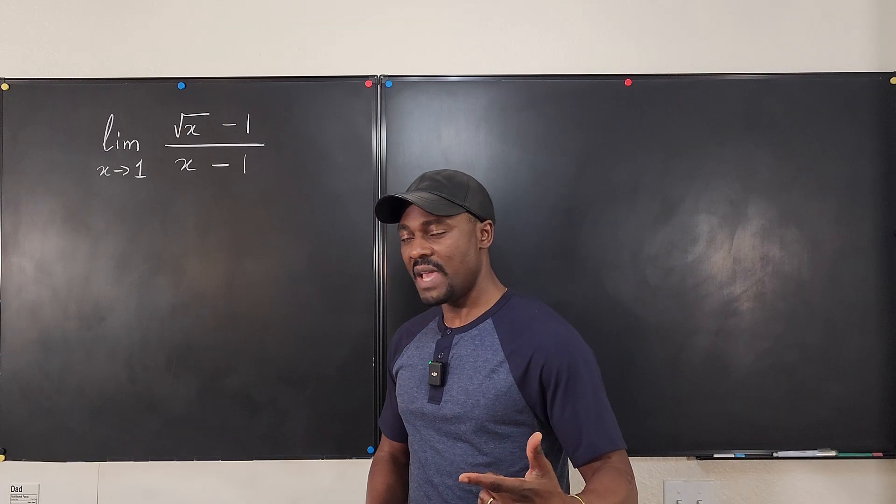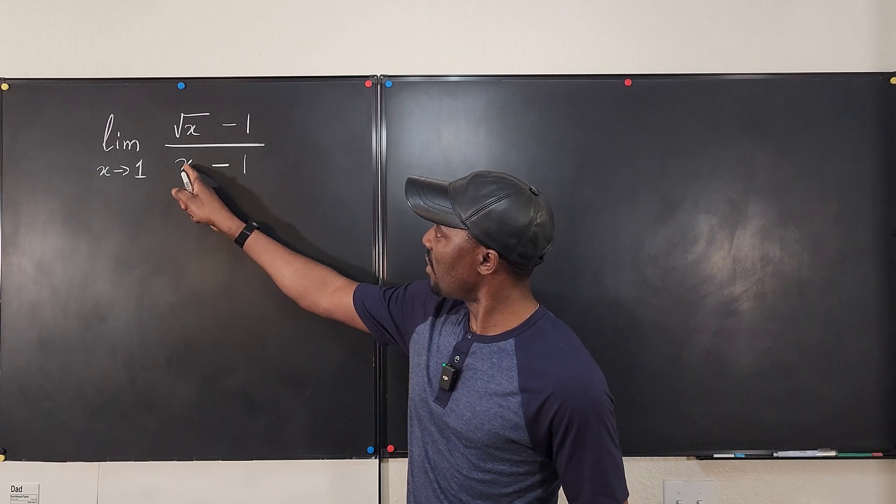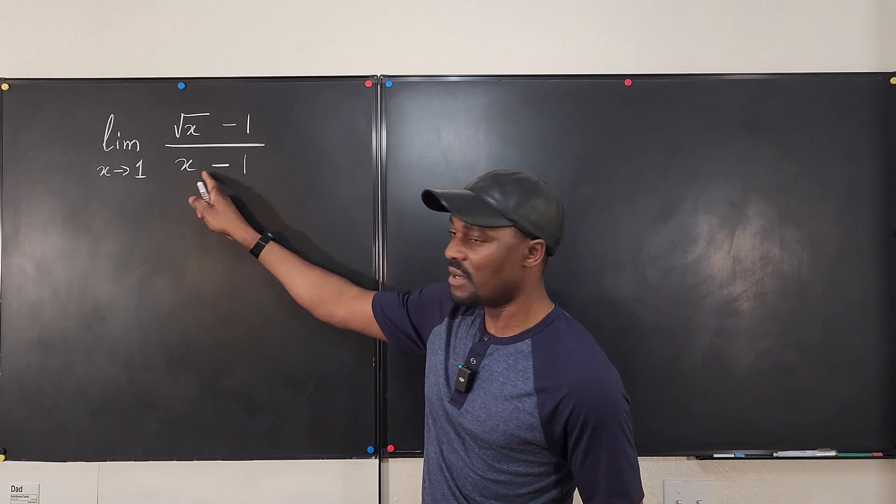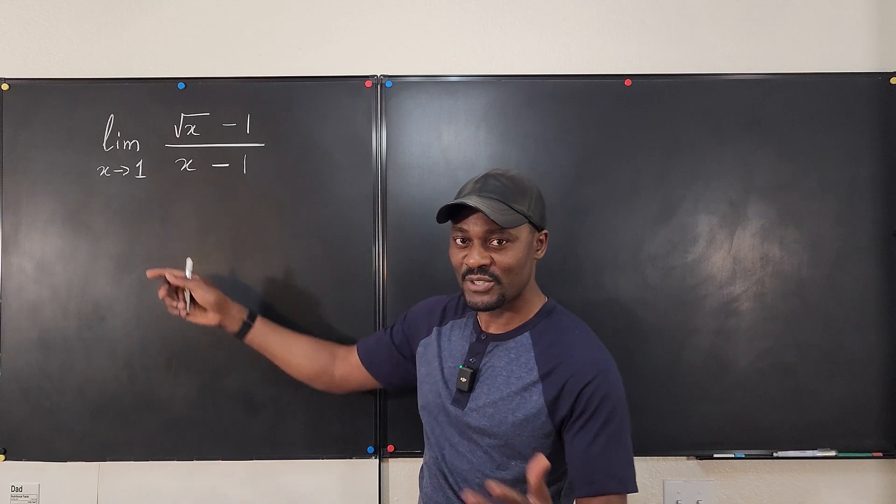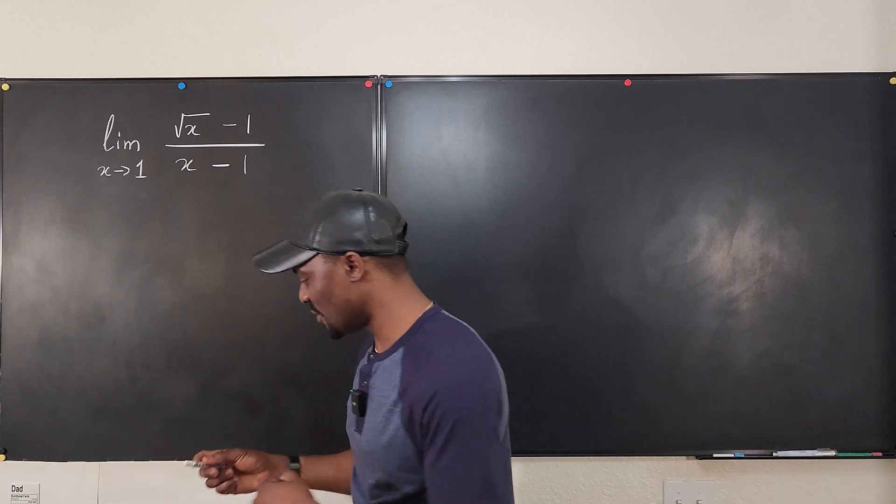The first move we're going to make is look at the bottom. It looks like the square of this is this. So I can treat the bottom as the difference of two squares because one is a perfect square. So I can go ahead and do it this way.